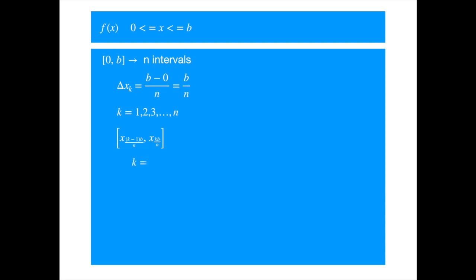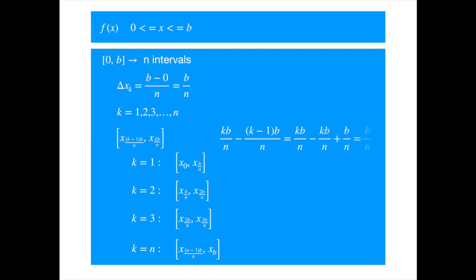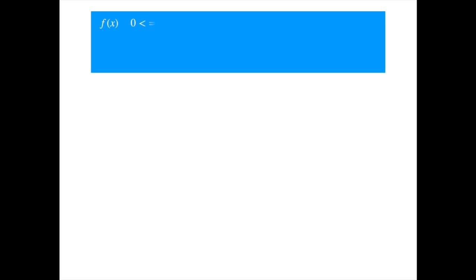Let's enumerate a few intervals to make it real. We can easily verify that the length of each sub-interval is indeed b over n. We will use the definition of the function and the sub-intervals to introduce the concept of variation.